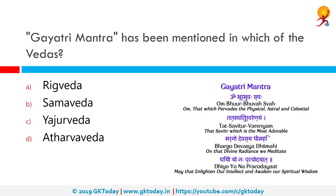Gayatri Mantra has been mentioned in which of the following Vedas? The correct answer is the Rig Veda. Gayatri Mantra comes from the third Mandala of the Rig Veda. This Mandala has 62 hymns, mainly dedicated to Agni and Indra. It is one of the family books and the oldest core of the Rig Veda.